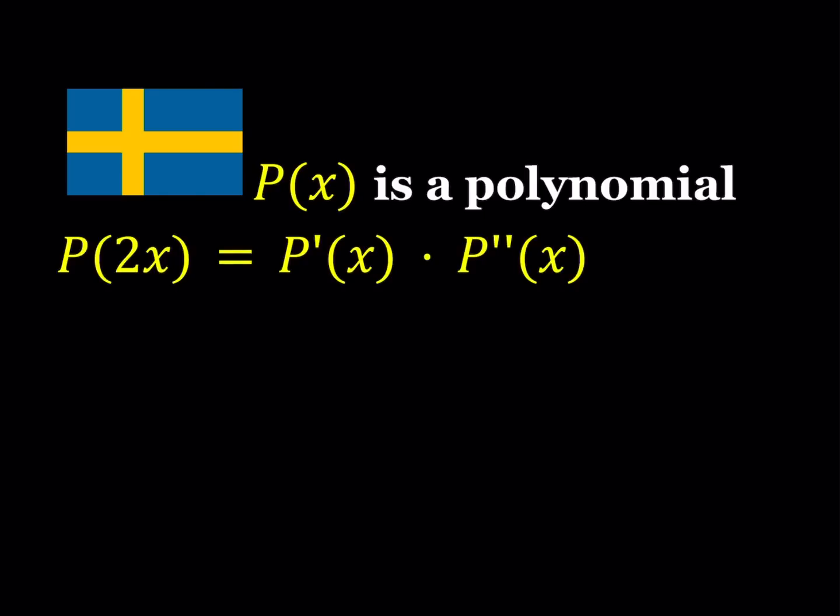Hello everyone. In this video we're going to be solving a polynomial equation from Sweden. We have P(x) as a polynomial and the equation is P(2x) equals the first derivative of P(x) multiplied by the second derivative of P(x). This is kind of like a functional equation with derivatives, so you could also consider this a differential equation, but at the same time P(x) is a polynomial so we can call that a polynomial equation too.